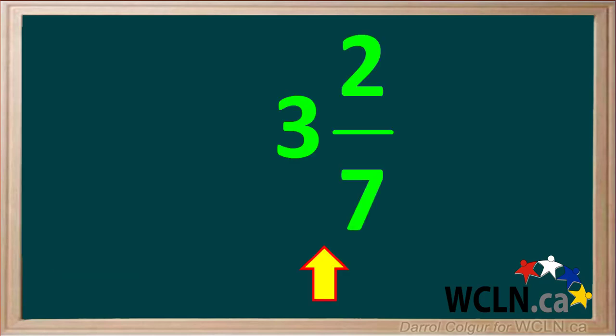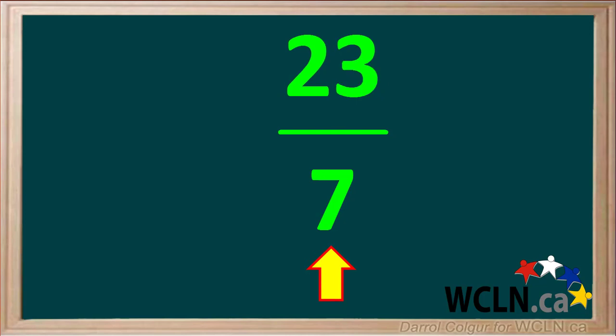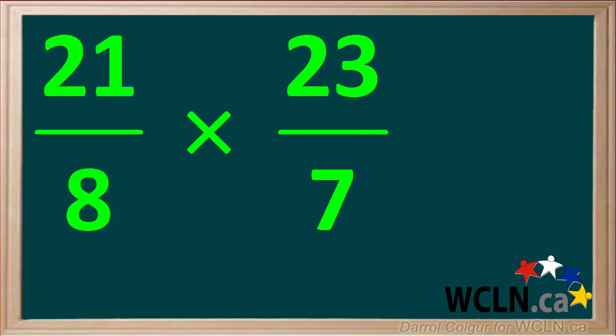Our other mixed number is 3 and 2 sevenths. To change this to an improper fraction, we go 3 times 7 equals 21 plus 2 equals 23. So the improper fraction is 23 sevenths. To find the answer, we need to multiply these two improper fractions.